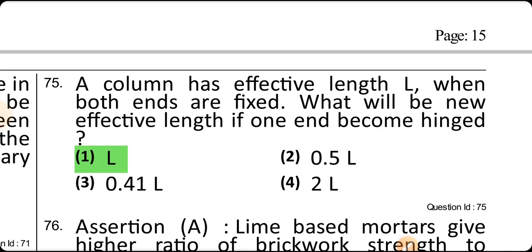A column has effective length L when both ends are fixed. If one end becomes pinned, the new effective length will be L — the effective length equals the actual length of the column.